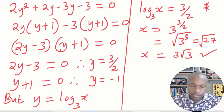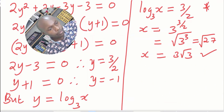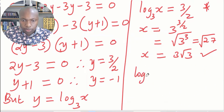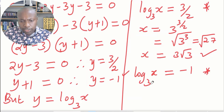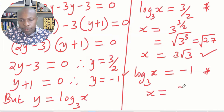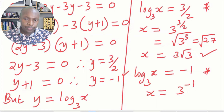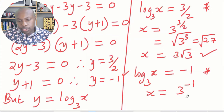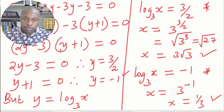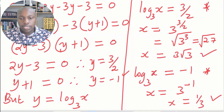The second value: log x to the base of 3 equals negative 1. In index notation, x equals 3 raised to the power negative 1, which equals 1 over 3. So the two values of x are x equals 3 root 3 and x equals 1 over 3.